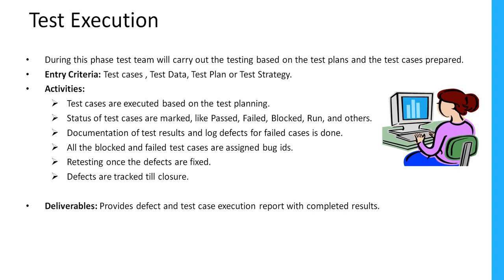Hi everyone, welcome. In this video I'm going to explain about test execution. During this phase, a testing team will carry out the testing based on the test plans and test cases they have prepared. What is the entry criteria for test execution? Before test execution we need to have test cases, test data, test plan, and test state — these are the different documents we should have before jumping into test execution.